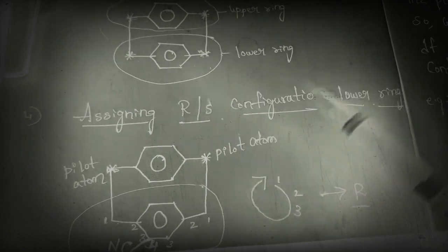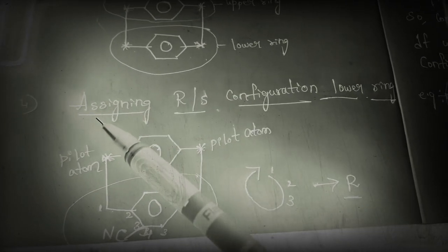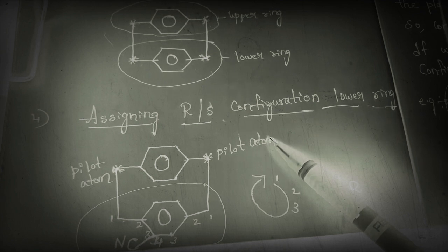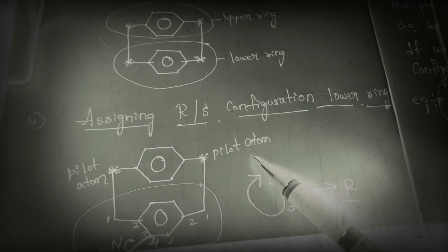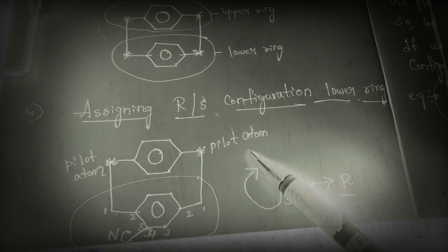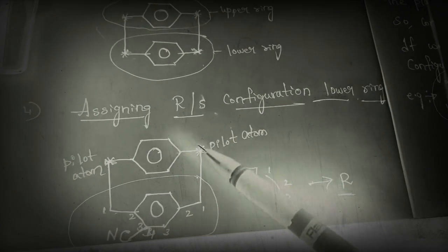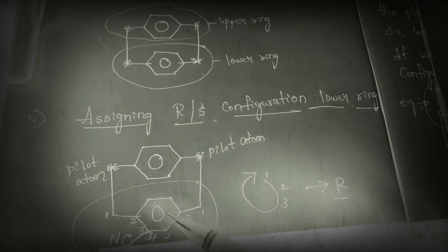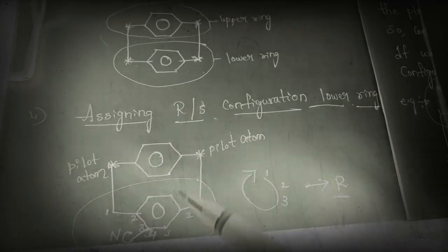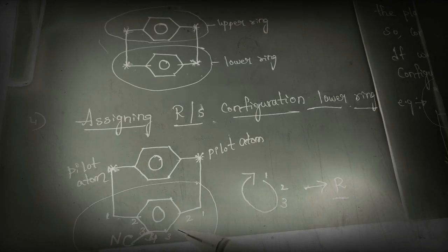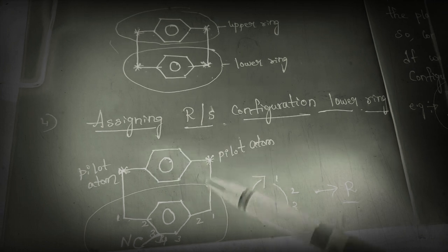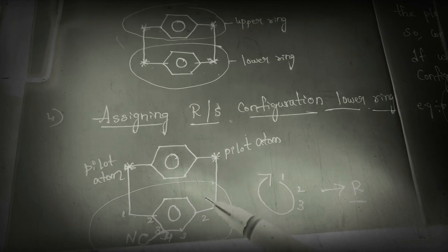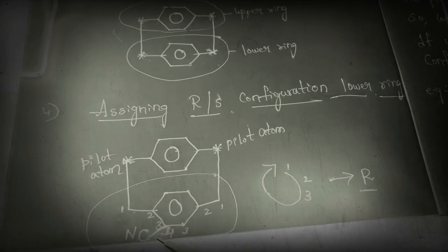Now we will enter into the main topic — assigning R or S configuration to the lower ring. Just like our previous concepts, assigning R or S configuration is very simple here too. The substituent is present so it is optically active. We are going to assign R or S configuration to the lower ring first, then we will go to the upper ring.